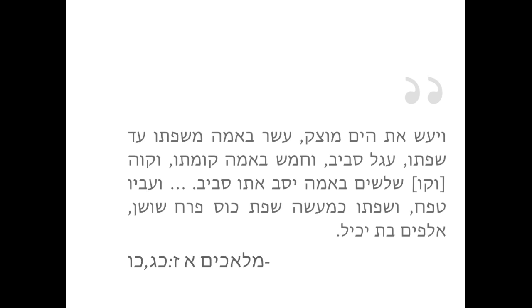The answer lies in the Pasuk and Malachim Aleph regarding the Yom Sheh Shlomo. The Pasuk says, V'yas Ziyam Mutzok Hisholom HaMelech made the sea molten. Rather, he had Chiram make it molten. Eser Ba'ama Mispaso Ad Sfaso Ten Amas from one edge to the other. Agul Saviv, it was round. V'chamish Ba'ama Komaso It was five Amos tall.